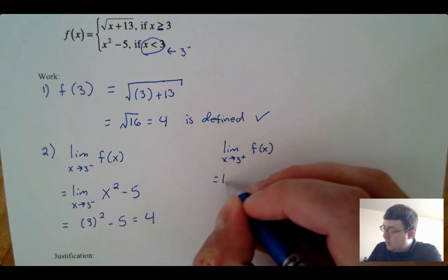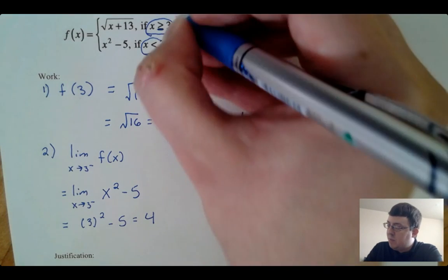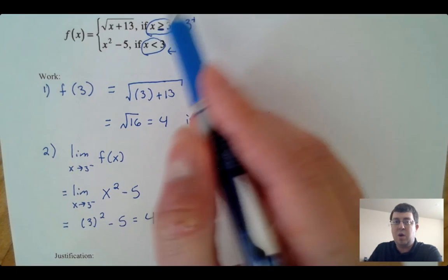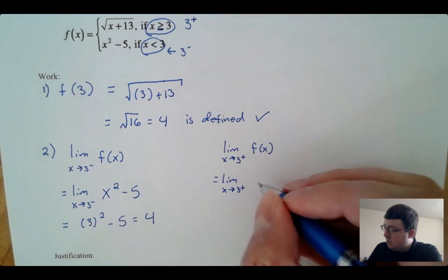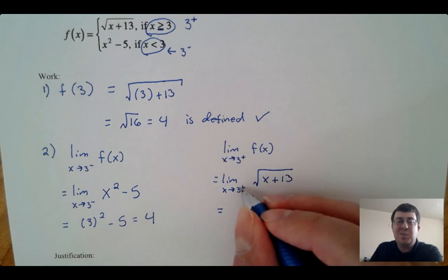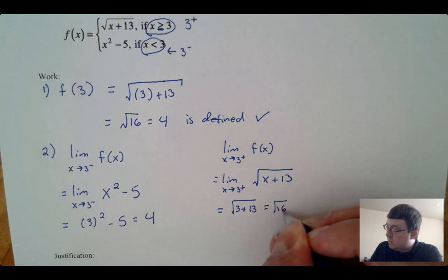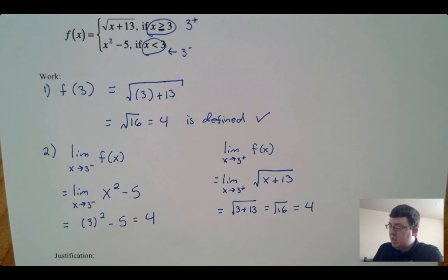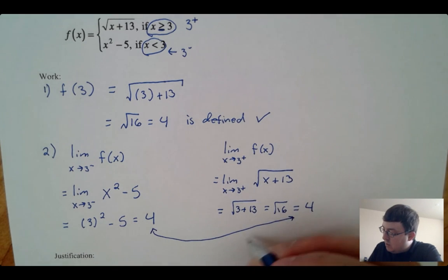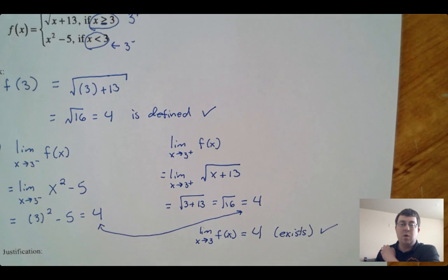For the limit as x approaches three from the right, I use the piece where x is greater than or equal to three — the function square root of x plus 13. Plugging in three gives me the square root of three plus 13, which is the square root of 16, which equals four. So the full limit as x approaches three of this function equals four, and it exists.